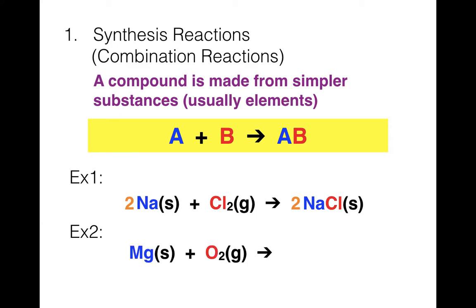The second synthesis example: magnesium metal reacting with oxygen gas, O2 — also diatomic, so always a 2 there. When we combine magnesium and oxygen, thinking about their charges, the one product we get is magnesium oxide, MgO. To balance: Mg is fine, but we have two O on the left and one on the right, so we put a 2 in front of MgO, which then requires a 2 in front of Mg as well.